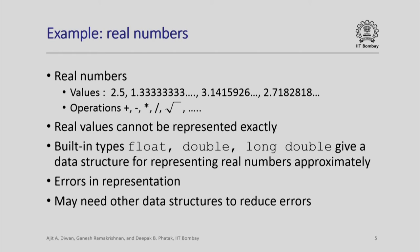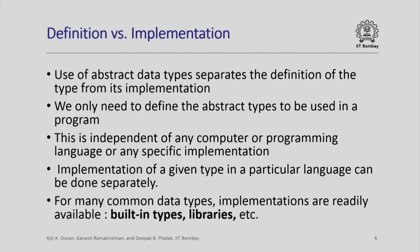All of them implement the same abstract data type — real numbers. This helps because it allows us to separate the implementation of a data type from its definition. When I define an abstract data type, I am only talking about what the possible values are and what operations can be performed, and this can be defined independent of any programming language, any computer, or any specific data structure.